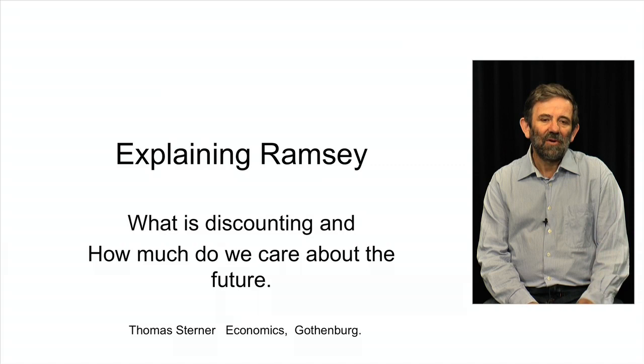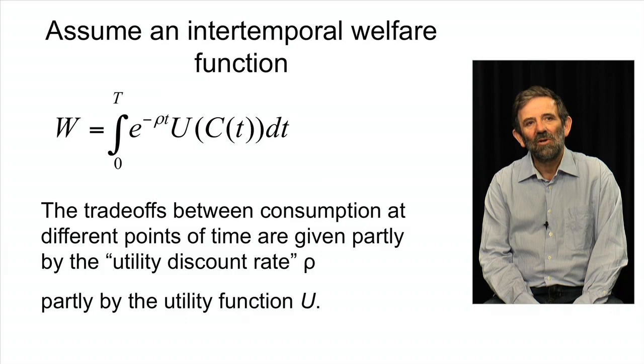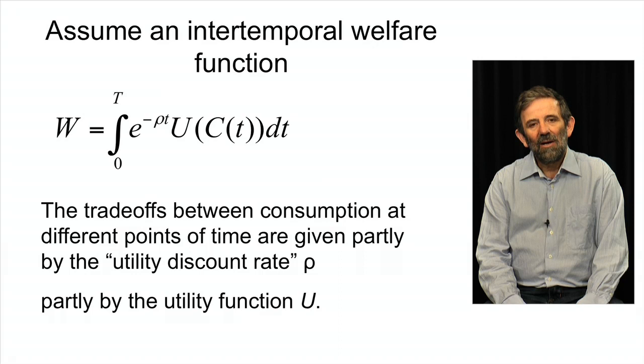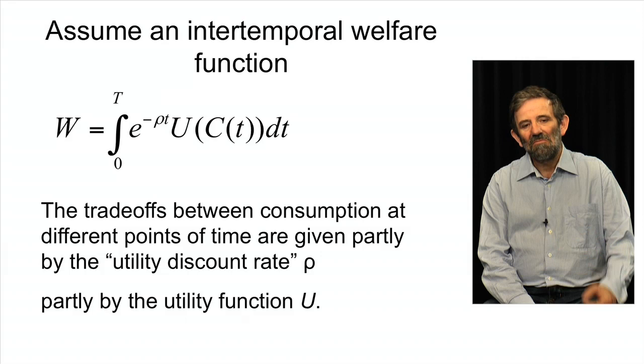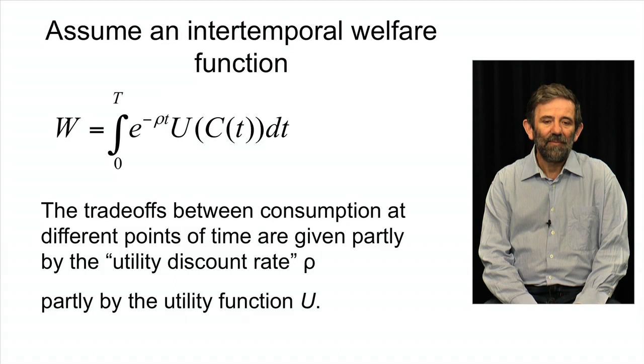So I'm going to explain some of the fundamentals of what we refer to as the Ramsey Rule. We start with assuming an intertemporal welfare function. This means that everything about the future is summed up in one welfare function where the utility, the stream of utilities that we get from consumption each year, are summed up and then discounted at the utility discount rate ρ. Rho here is a discount rate that reflects how much less we care about the future than about today.